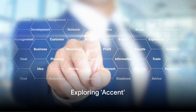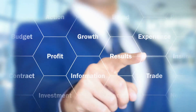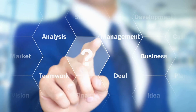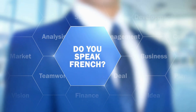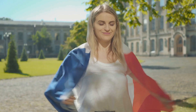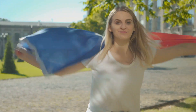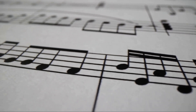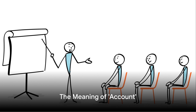Next up, accent. Primarily a noun, it is the way someone pronounces words, often tied to a particular geographical region or social group. Picture someone saying, I love your French accent. Yet in another context, as a verb, accent means to emphasize a particular feature. A musician might accent a note to make it more prominent.